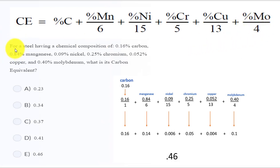So here's the question: For a steel having a chemical composition of 0.16% carbon, 0.84% manganese, 0.09% nickel, 0.25% chromium, 0.052% copper, and 0.40% molybdenum, what is the carbon equivalent? So here's how you do it. It's really simple, it's just a lot of numbers. Just make sure you add the numbers up right.